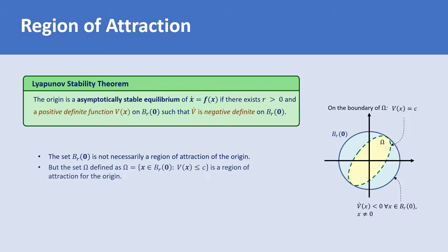We are usually interested in the largest set omega that we can determine, so we choose the largest value for the constant c. In general, finding the exact region of attraction analytically might be difficult or even impossible. However, Lyapunov functions can be used to estimate the region of attraction. Note that although linearization and the Lyapunov method can both be used to determine the stability of equilibrium points, the Lyapunov method has the advantage that a region of attraction can be obtained from the level curves of the Lyapunov function used for the stability analysis.